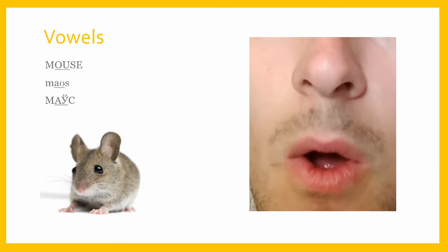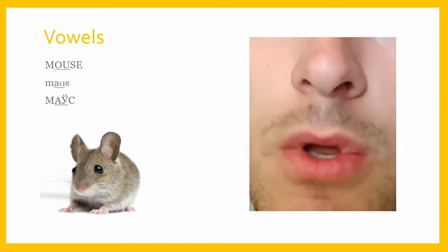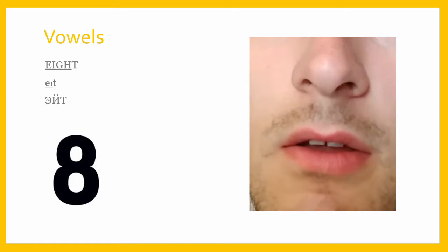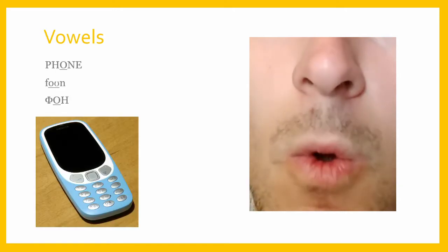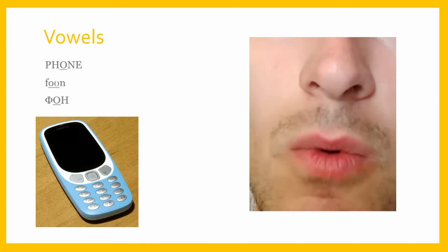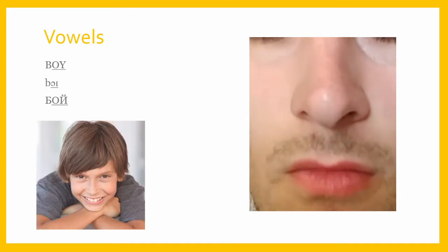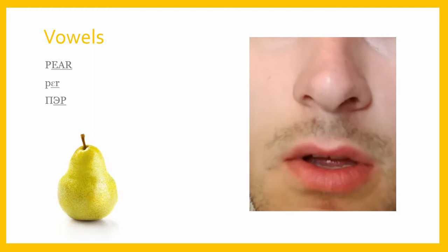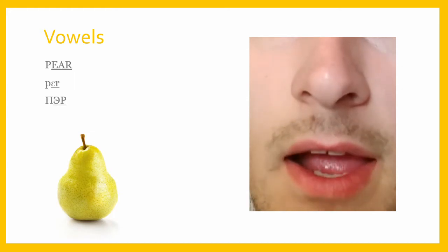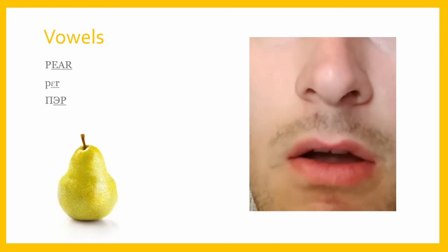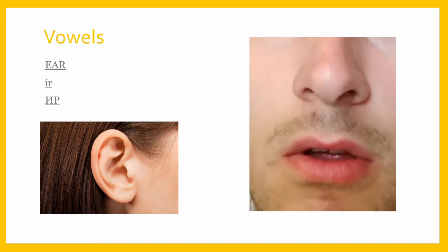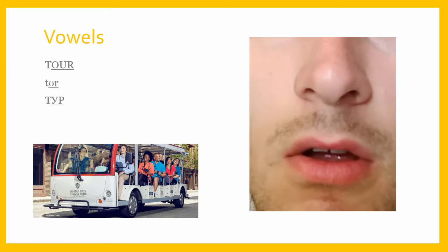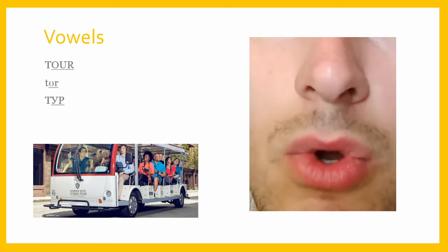Ow — mouse. A — eight. O — phone. Oy — boy. Air — pear. Ear — ear. Ur — tour.